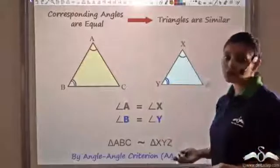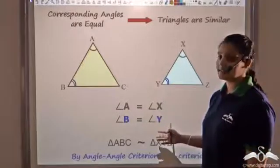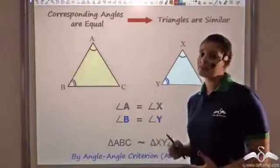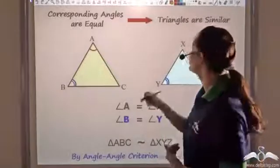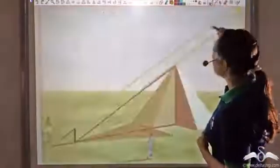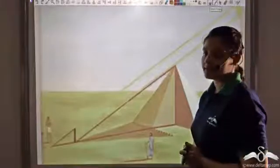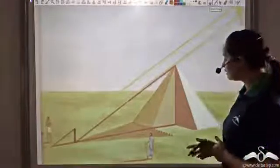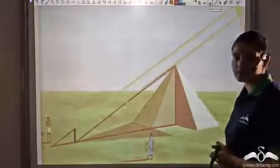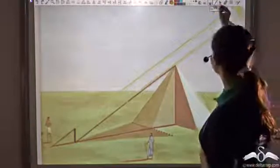You'll be surprised to know that this criterion of similarity was actually used centuries ago by Thales. He used this angle-angle similarity to actually find the height of pyramids in Egypt. Let us see how he used it.